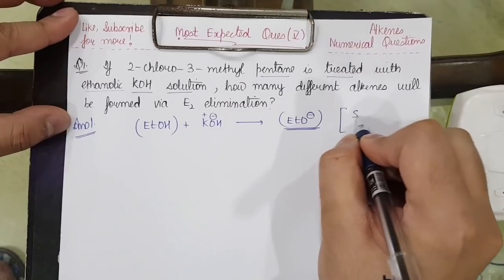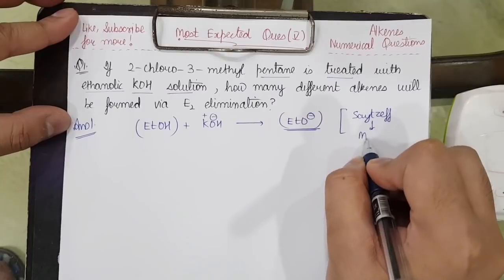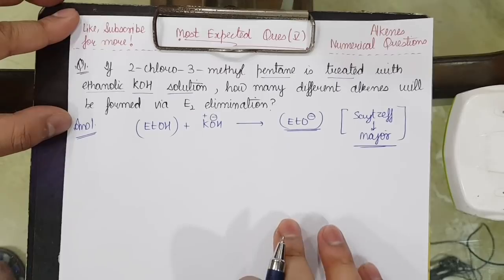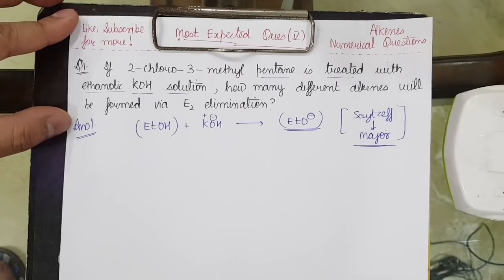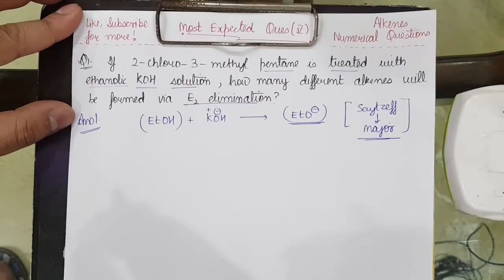I have Saytzeff elimination as the major one. But since the number of products have been asked, we can form all the Saytzeff and the Hofmann products which are possible. Now we have said that E2 elimination will occur. So let us try to see how the reaction happens.